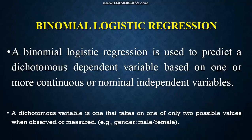Here we should know that a dichotomous variable is one that has only two possible values when observed or measured. For example, gender is a dichotomous variable and it has two possible values — male and female.